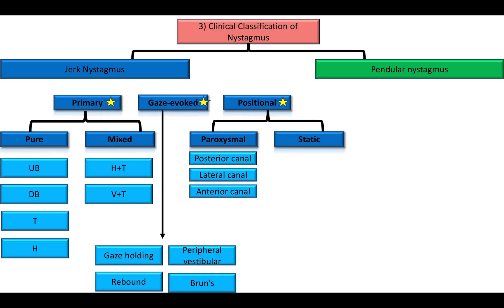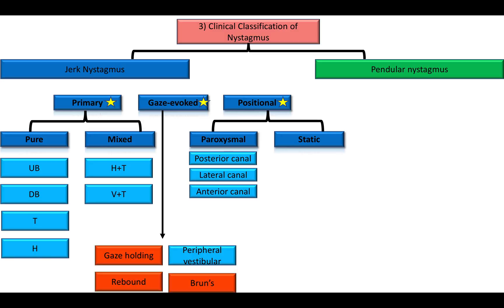Coming to gaze evoked nystagmus, it could be either central or peripheral in origin. The peripheral vestibular gaze evoked nystagmus is classically seen in acute unilateral vestibulopathy. It is unidirectional — the fast component beats towards the normal ear irrespective of the gaze. But central vestibular nystagmus is typically bidirectional, with the fast component beating towards the direction of gaze.